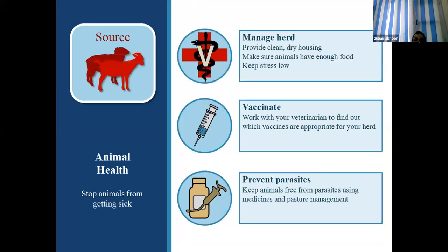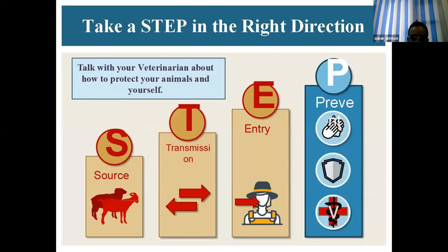To control zoonosis at the source level, keep animals healthy — stop animals from getting sick. Manage manure, provide clean dry housing, ensure animals have enough food, and keep low stress. Properly vaccinate animals, working with your veterinarian to find which vaccines are appropriate for your herd. Prevent parasites using medicines and pasture management. Work with your veterinarian about how to protect your animals and yourself.